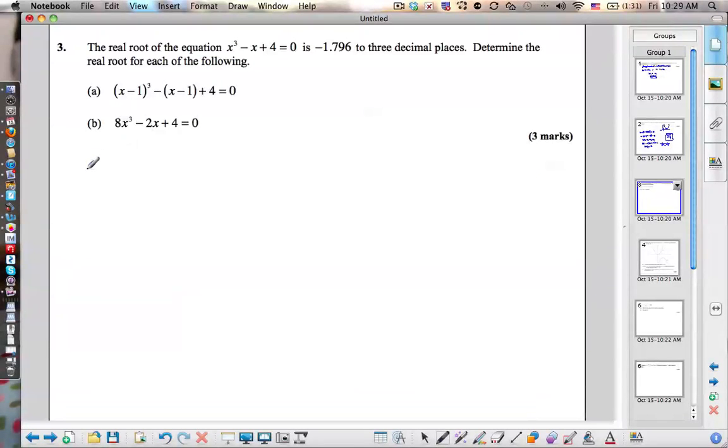You should know that x minus 1, when I go f of x minus 1, it moves to the right one unit, moves to the right one unit. So if this has, if this function has an x intercept at negative 1.796, then it should move it to the right by 1.